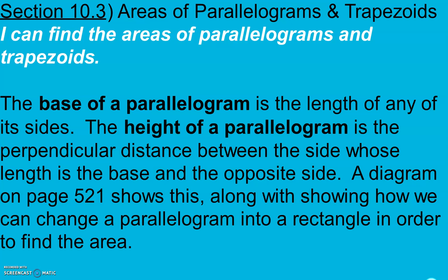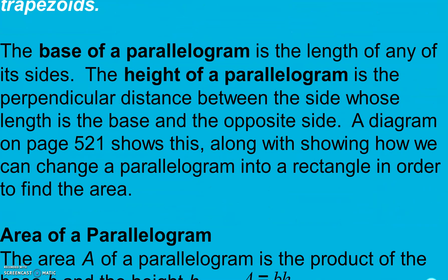The base of a parallelogram is the length of any of its sides. The height of the parallelogram is the perpendicular distance between the side whose length is the base and the opposite side. So if we were to draw a line straight up from the base, how far it takes us to get to its parallel side — that's its height. There's a diagram on page 512 that shows that, along with showing how we change a parallelogram into a rectangle in order to find the area. If you have more questions on that, check out page 521.